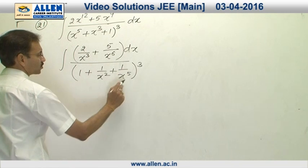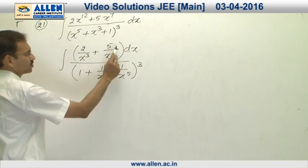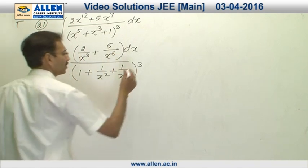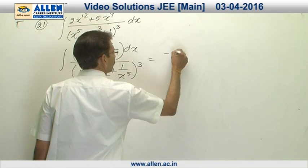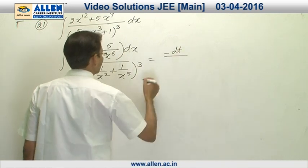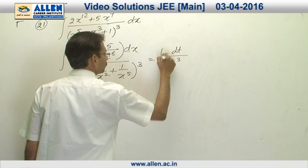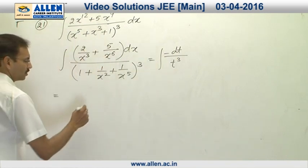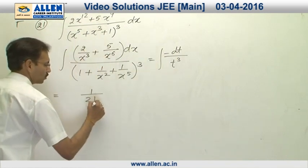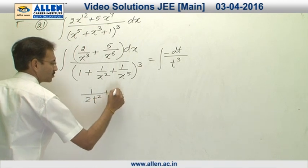Now, if we consider this expression as t, we can see this is minus dt. So, I can say it is minus dt over t cube and the integration will be 1 upon 2t square plus c.